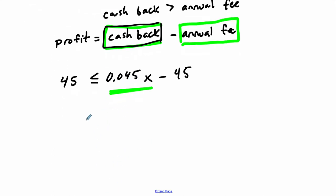So let's rewrite it. We have 45 is less than or equal to 0.045x minus 45. So we add 45 to both sides. Let me just make sure I got that right. Yep.